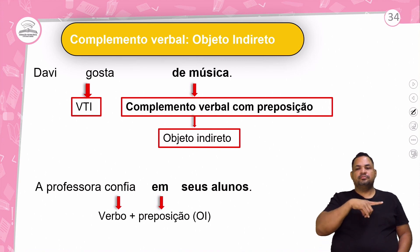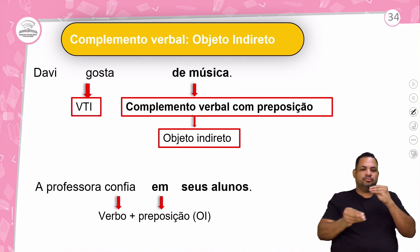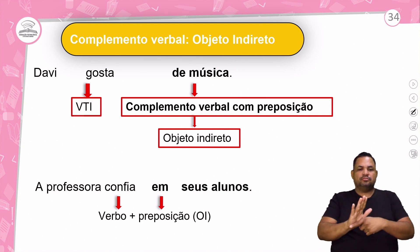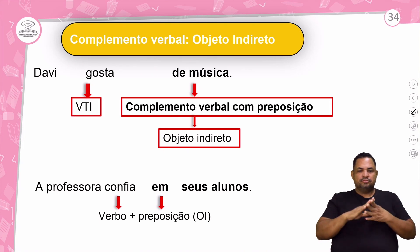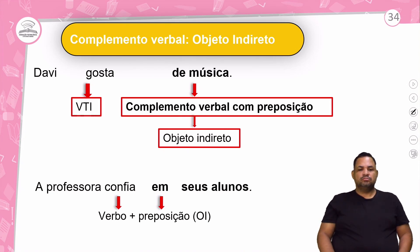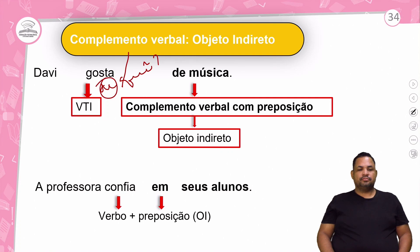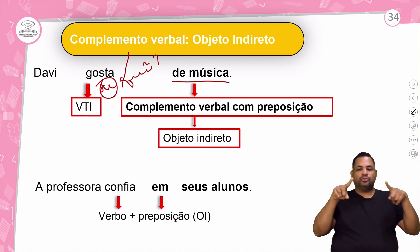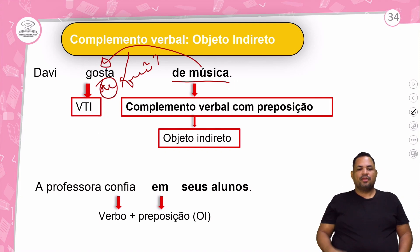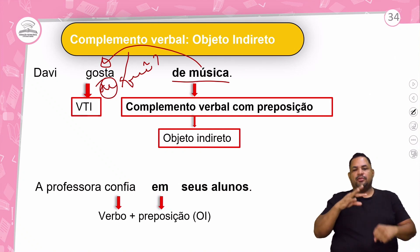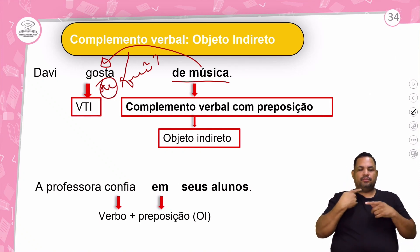Quando o complemento verbal for objeto indireto, ele vai exigir o auxílio da preposição no complemento. Por exemplo: Davi gosta. Gosta de quê? A pergunta já vem com a preposição: de música. Então essa parte 'de música' está completando o sentido do verbo gostar. O verbo gostar é verbo transitivo indireto porque aparece aqui a preposição.